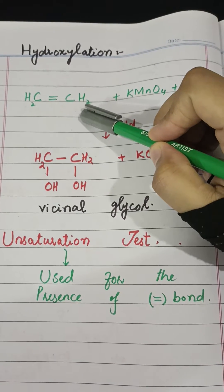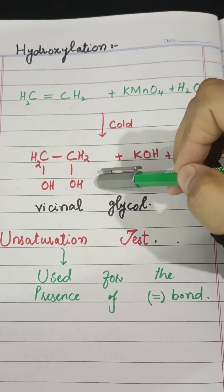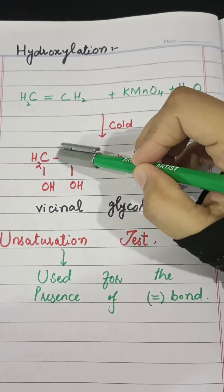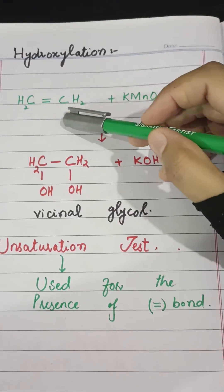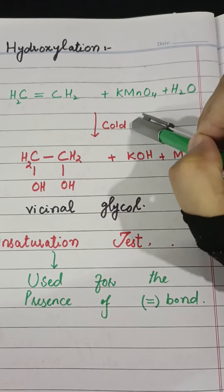First of all, you have to understand the term hydroxylation, which means the introduction of hydroxyl group across the double bond. For that purpose, we have to take potassium permanganate and water in cold conditions.